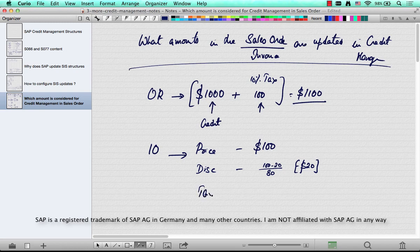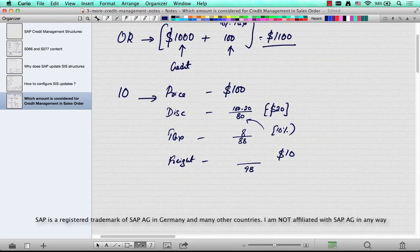And then there's a tax, which is 10%, and 10% on $80 is $8. So the total is $88. And the freight is $10. So 88 plus 10 is $98.